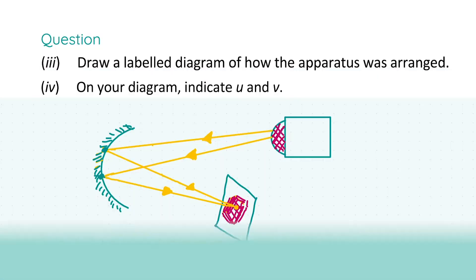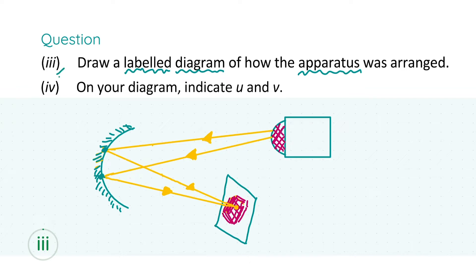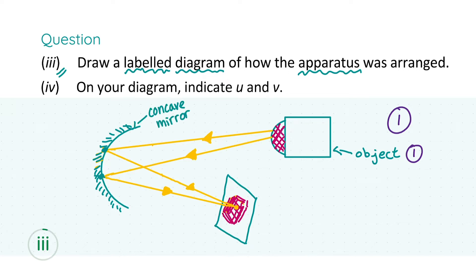Question 3: draw a labeled diagram — it's very important to label it, not just show the arrangement. One mark for correct arrangement. Our object is a lamp box with cross strings — you get another mark for that. We need to label the concave mirror for another mark, and finally we have our screen with the image on it, labeled for another mark. The light rays are shown intersecting on the screen to form the image.